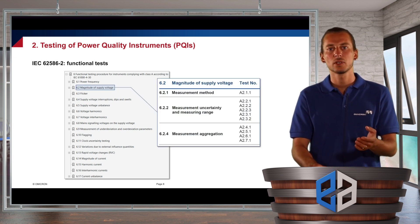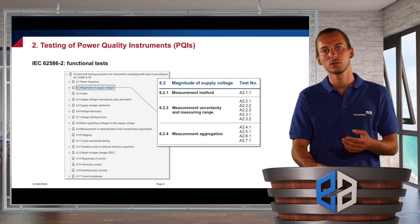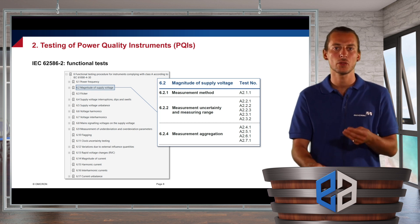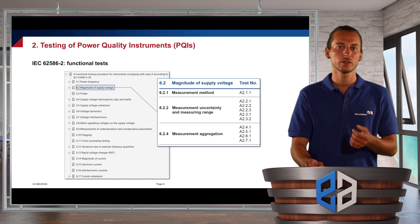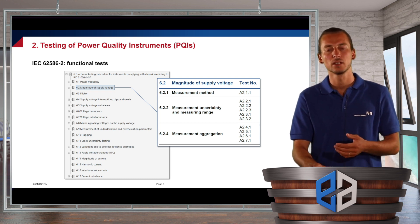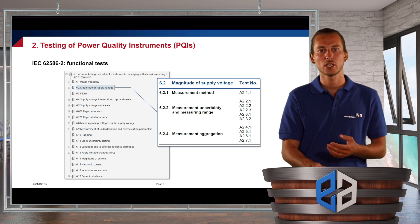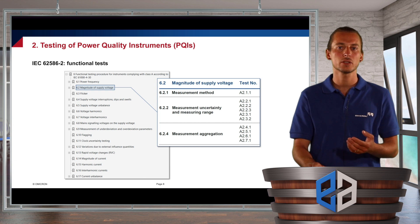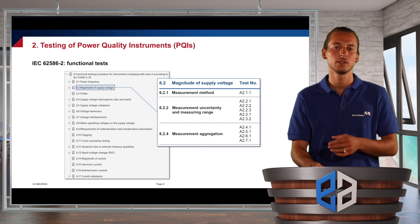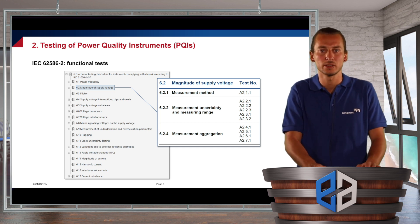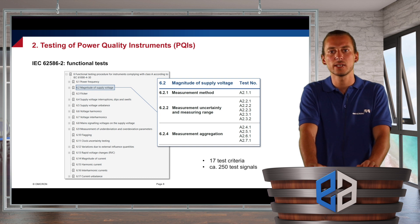For example, when we have a look on the magnitude of supply voltage tests, there are again several sub-chapters. Most of the times, there are three sub-chapters for each criteria. The first sub-chapter is checking for several measurement methods. The second sub-chapter is checking the measurement uncertainty over the full measuring range. And then in the third chapter, there are several tests for the aggregation of measurements. All in all, there are 17 test criteria and more than 250 test signals.